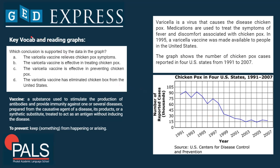So let's have a look at the question: what conclusion is supported by the data in the graph? A: the varicella vaccine relieves chicken pox symptoms. B: the varicella vaccine is effective in treating chicken pox. C: the varicella vaccine is effective in preventing chicken pox. D: the varicella vaccine has eliminated chicken pox from the United States. The key differences are — A talks about relieving symptoms, B treating chicken pox, C preventing chicken pox, and D eliminated chicken pox from the United States.